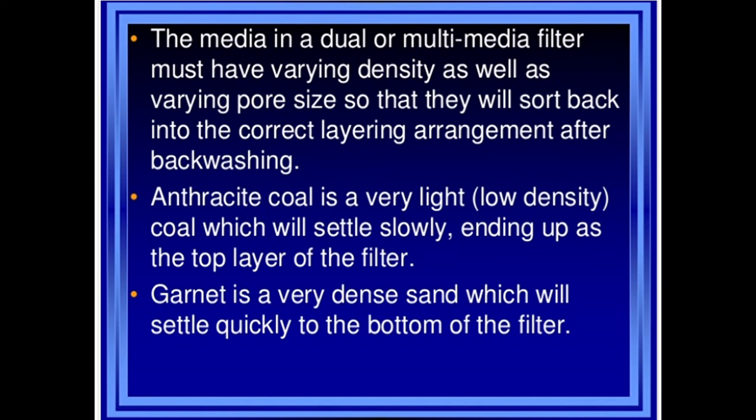Anthracite coal is very light, having low density, which will settle slowly, ending up as the top layer of the filter. Garnet is a very dense sand which will settle quickly to the bottom of the filter.